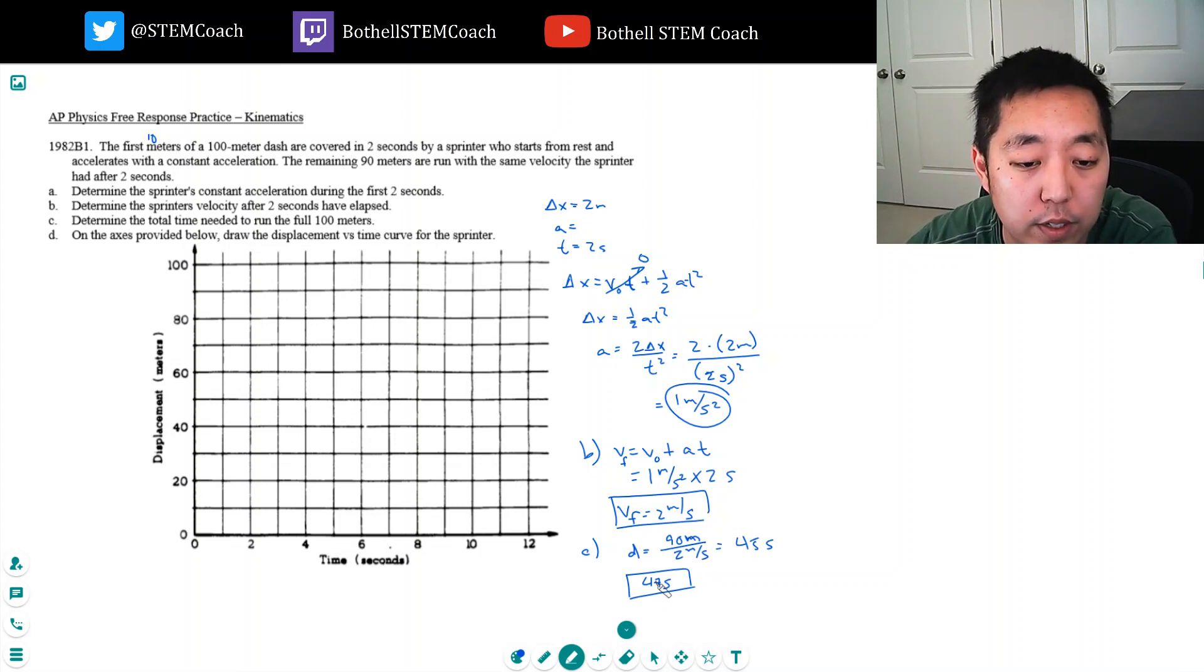Part D: On the axis provided below, draw the displacement versus time. So he travels... his initial displacement... let's see, he travels... oh it's not two meters, I don't know why I said that. It's 10 meters.